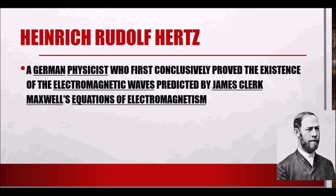Then we have Heinrich Rudolf Hertz, a German physicist who first conclusively proved the existence of electromagnetic waves predicted by James Maxwell's equations of electromagnetism. Hertz proved that electromagnetism can be transmitted using waves. It was also stated by James Clerk Maxwell that light is a form of electromagnetic wave, and that was proven by Heinrich Rudolf Hertz through his experiments.